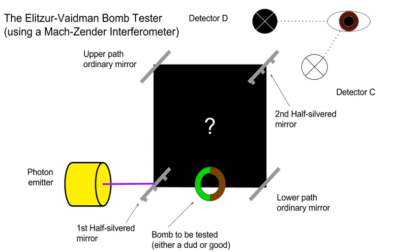If the result is outcome 2, the experiment is repeated. If the photon continues to be observed at C and the bomb doesn't explode, it can eventually be concluded that the bomb is a dud. With this process, 25% of live bombs can be identified without being detonated, 50% will be detonated, and 25% remain uncertain. By repeating the process with the uncertain ones, the ratio of identified non-detonated live bombs approaches 33% of the initial population of bombs.